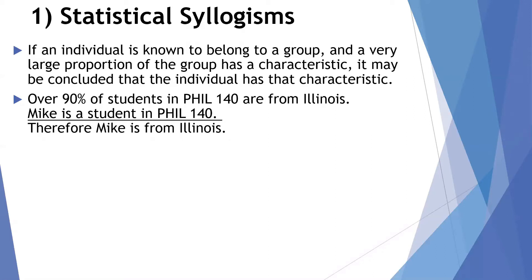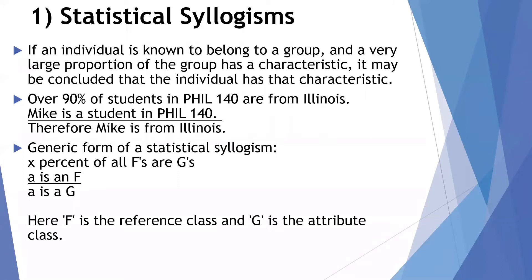A reasonable argument — a reasonable conclusion to draw from the premises. We can express the broad form of a statistical syllogism this way: we have a percentage statement — X percent of all F's are G's — then we have the individual, A is an F, and we conclude that A is a G. More technically, F is the reference class, the broader group that we know the individual belongs in, and G is the attribute class, the subset that has the particular characteristic we're concerned about — in this case, being from Illinois.